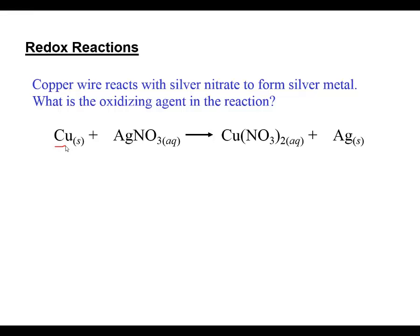Neutral copper, since it's higher on the list, is likely to be oxidized to form a copper 2 cation. The silver cation we begin with is lower on the list and ends up gaining one electron to form neutral elemental silver.